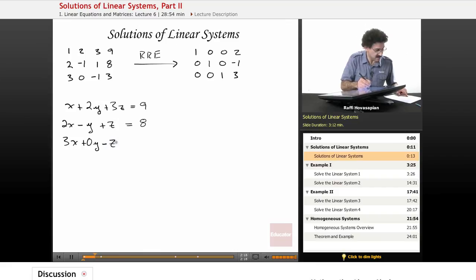Minus z is equal to 3. And again, what we've done is, whenever we transform a matrix from the standard matrix to its reduced row echelon form, we form an equivalent system. So what we've produced is the following.